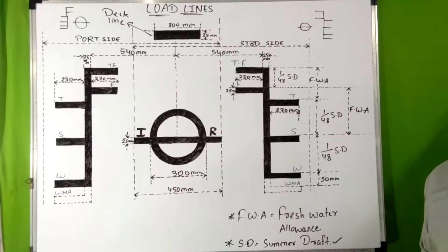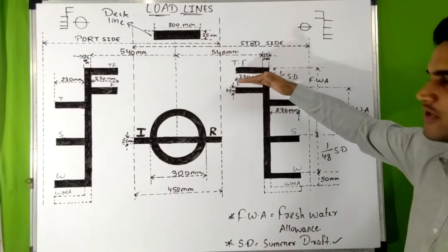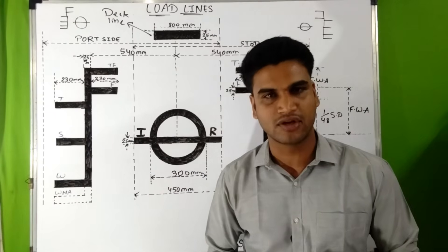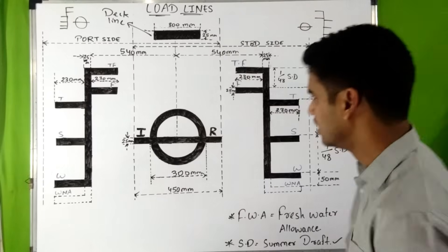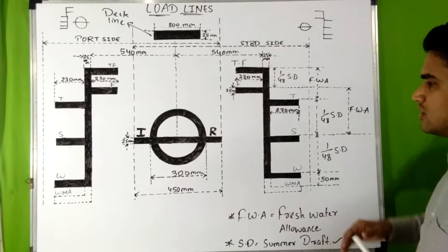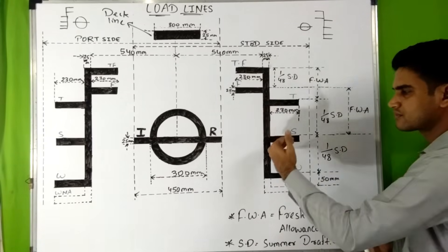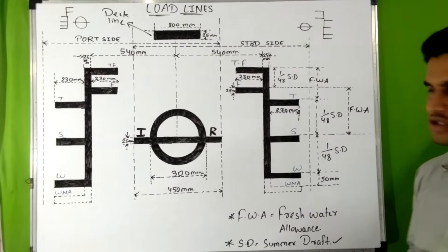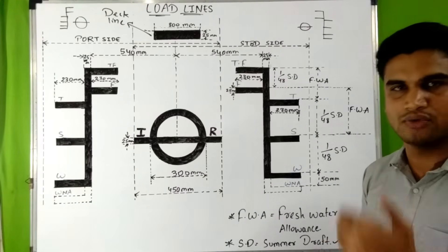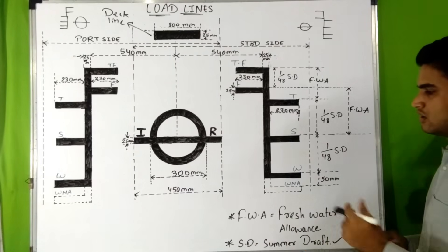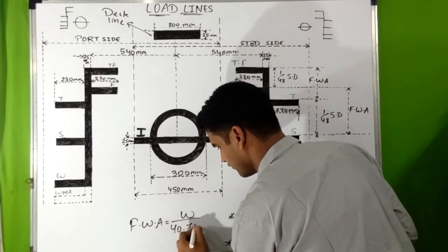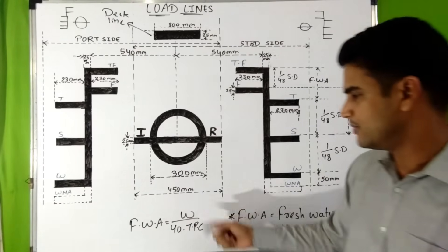Fresh water allowance is the height difference from the upper edge of the fresh water zone to the upper edge of the summer zone. It is defined as the increase in draft when a ship goes from salt water to fresh water. Since the fresh water zone marking is above the summer zone marking, the draft increases when a ship moves from salt water to fresh water. The formula for fresh water allowance is W divided by 40 TPC, where TPC means tons per centimeter and W means the displacement of the ship.